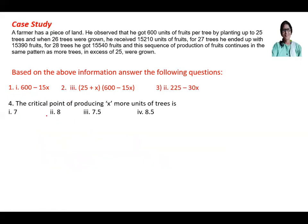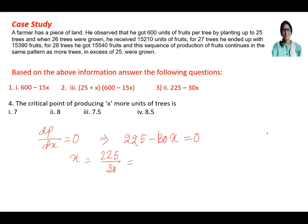Part four: the critical point means the value of x when dP/dx equals zero. So 225 − 30x = 0, which gives x = 225 ÷ 30 = 7.5. So the critical point is 7.5, which is option (c).